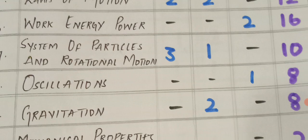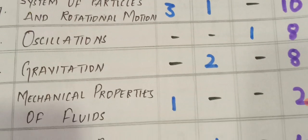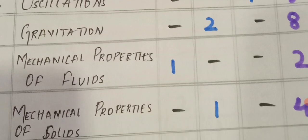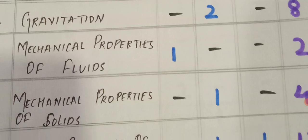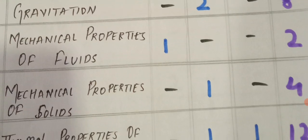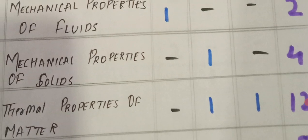Gravitation: 2 SAQs, total 8 marks. Mechanical Properties of Fluids: 1 VSCQ, 2 marks. Mechanical Properties of Solids: 1 SAQ, 4 marks.